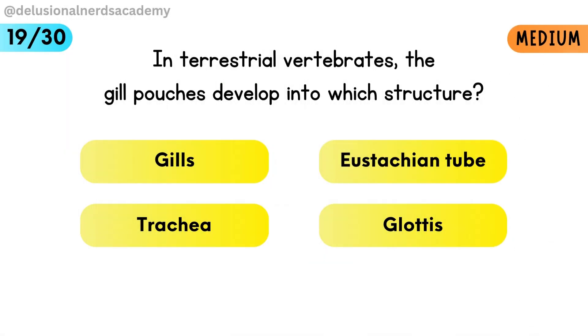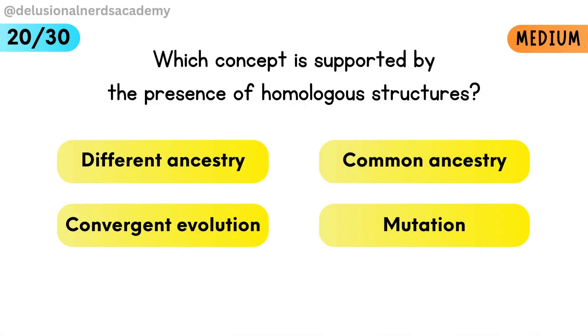In terrestrial vertebrates, the gill pouches develop into which structure? Gill pouches develop into the eustachian tube. Which concept is supported by the presence of homologous structures? Homologous structures show evidence of common ancestry.